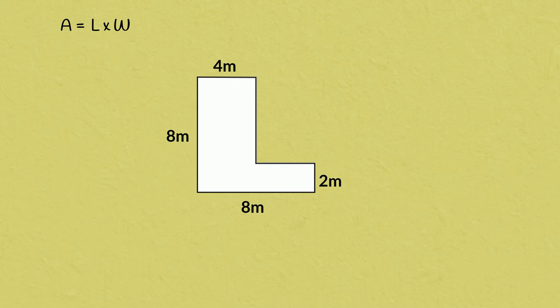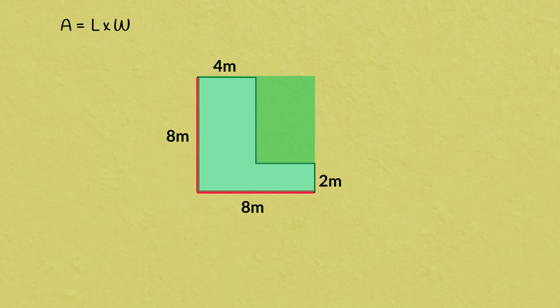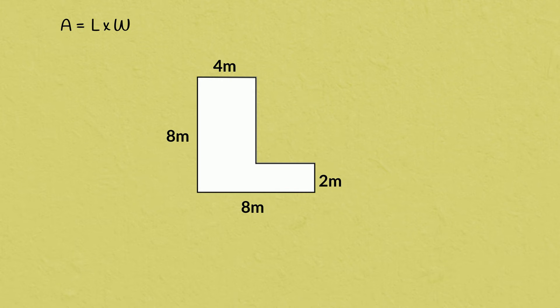If we were to multiply the length — 8 meters — by the width — also 8 meters — we would get 64 meters squared. But that would actually be this whole area, and that won't work because we're only interested in this shape. Our area is going to be smaller than that.